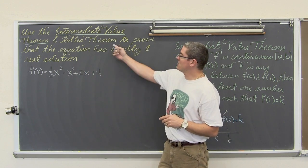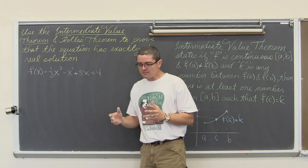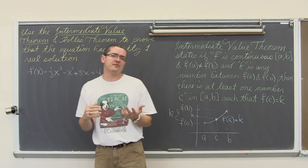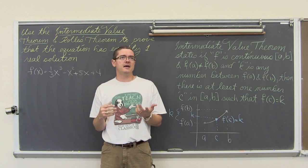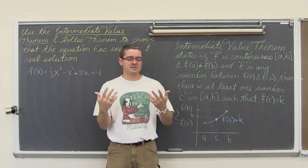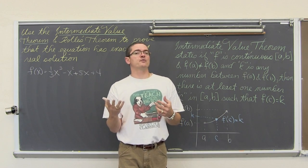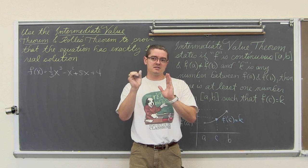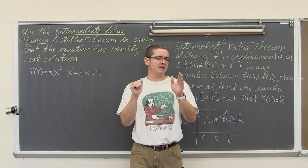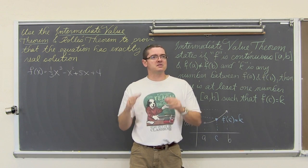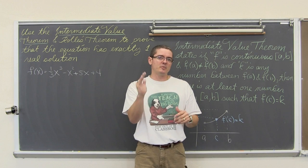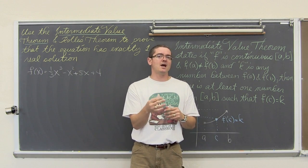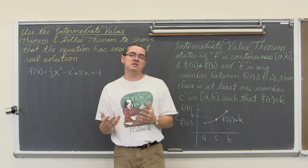The Rolle's Theorem says that if f of a equals f of b, and it is a continuous and differentiable function, then somewhere within that interval of a to b, that open interval of a to b, f prime of c is equal to zero.